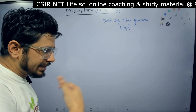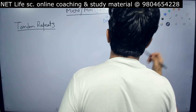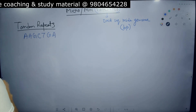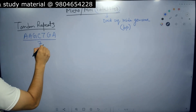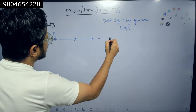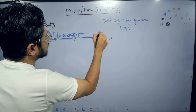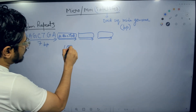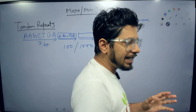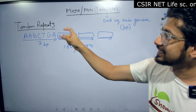What is a tandem repeat? It is a repeated presence of specific base pairs. For example, a sequence like A, A, G, C, T, G, A — seven base pairs — gets repeated. The same sequence, A, A, G, C, T, G, A, is repeated over and over. It can be repeated hundreds or even thousands of times in a genome. That repeated sequence is known as a tandem repeat. These tandem repeats are classified as mini-satellites or microsatellites.